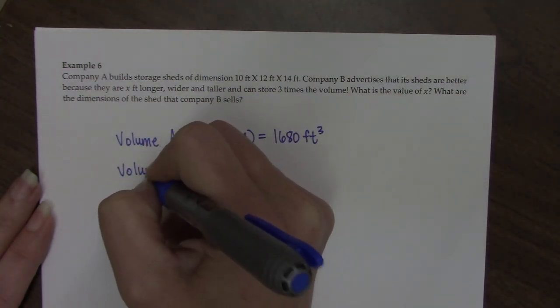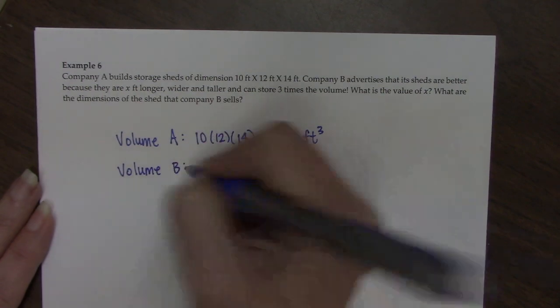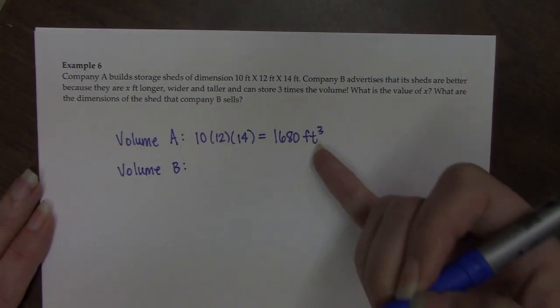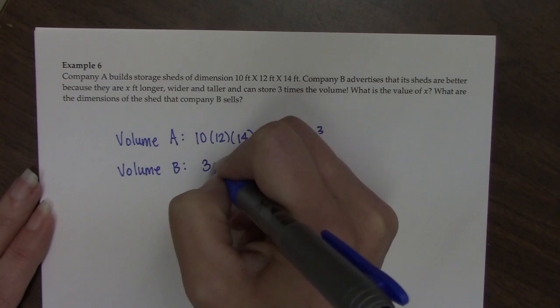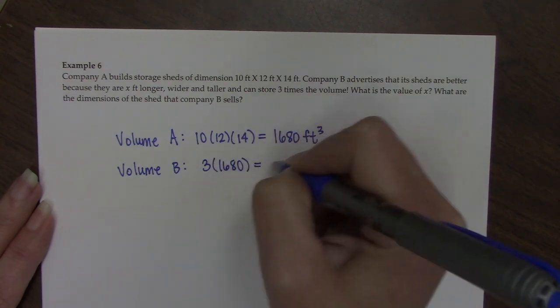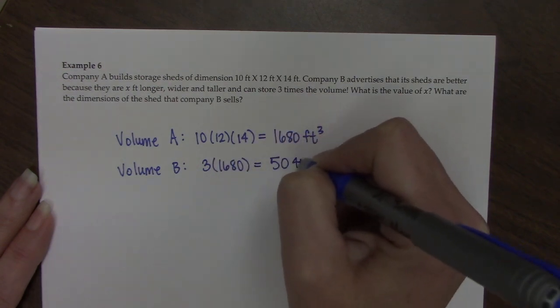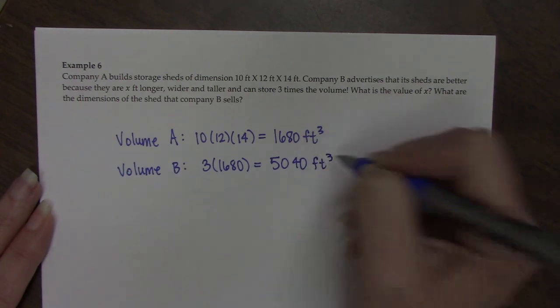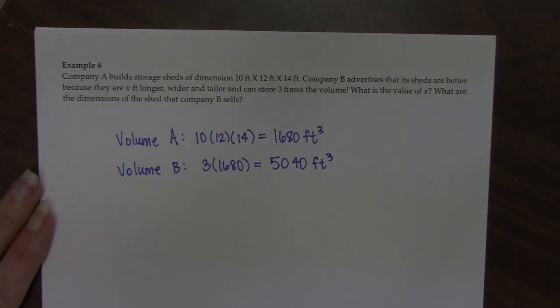Company B boasts that their sheds are three times as big in volume as Company A. So that means that their sheds have to be 5040 cubic feet.